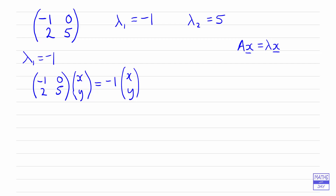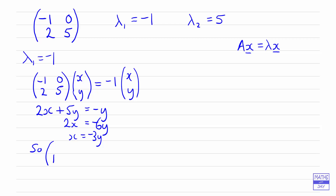If we look at the second row of the matrix, that will give us something to work with. So 2x plus 5y equals minus 1 times y, which is negative y. Rearranging, we get 2x equals minus 6y, so x equals negative 3y. We can choose any value for y, so the simplest choice is y equals 1, which gives x equals minus 3.